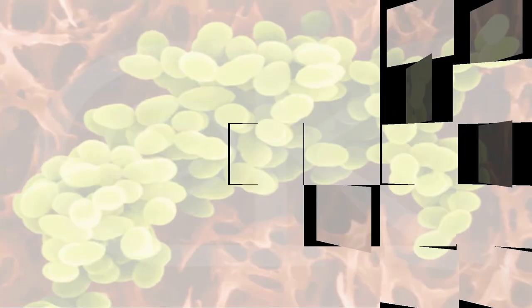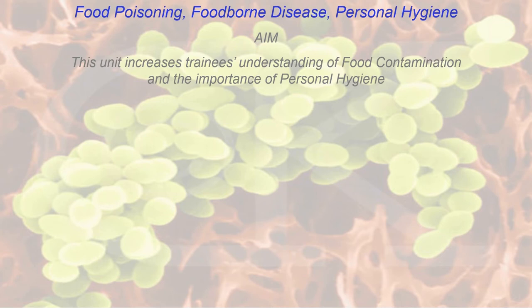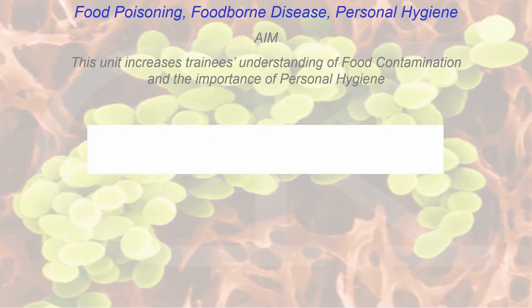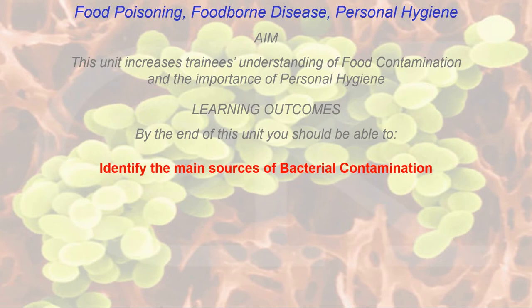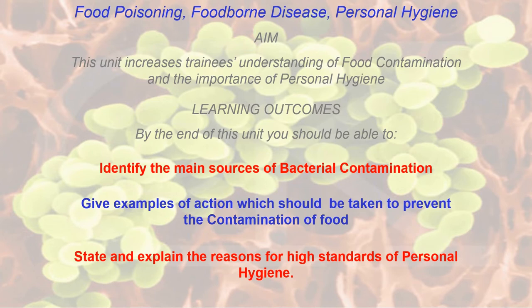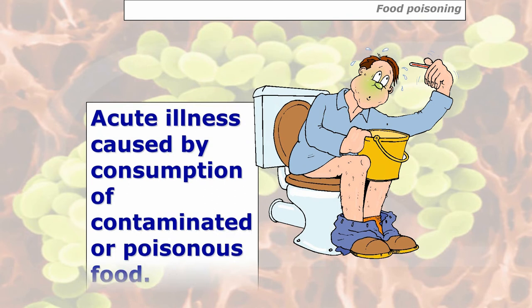Let's go on to lecture 3 which is Food Poisoning and Foodborne Disease and Personal Hygiene. The aim of this unit is to increase your understanding of food contamination and the importance of personal hygiene. By the end of this unit you will be able to identify the main sources of bacterial contamination, give examples of actions to prevent contamination, and explain the reasons for high standards of personal hygiene.